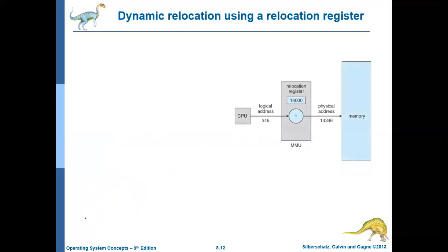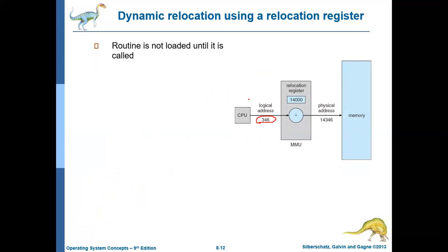Let us see how this happens with an example. Assume that the CPU is creating a logical address 346. Since we are using execution time binding, the actual mapping to the physical address will be done at runtime. There will be a register called the relocation register, which is nothing but the base register. Whatever the content in the relocation register, that will be added with the logical address, and as a result, what you get will be the actual physical address.